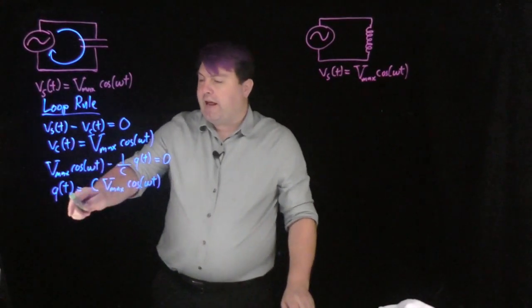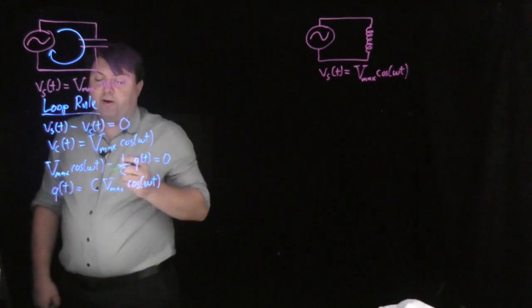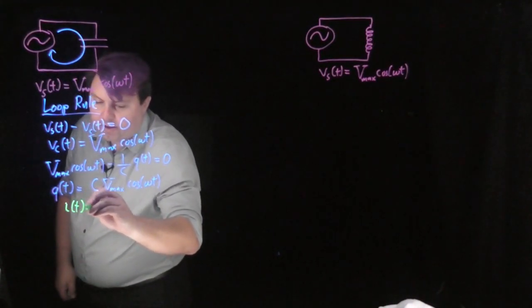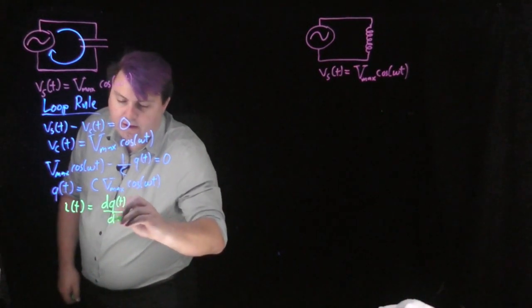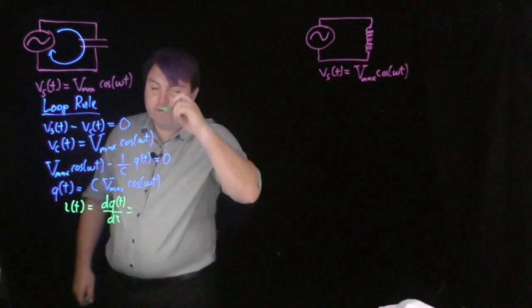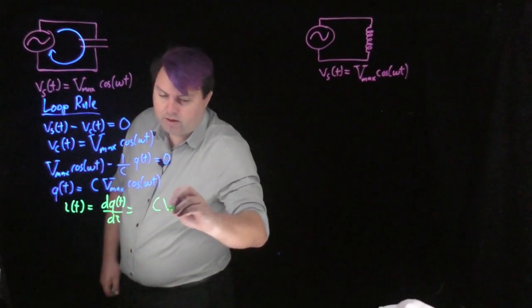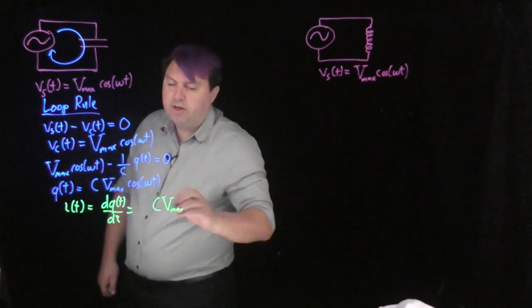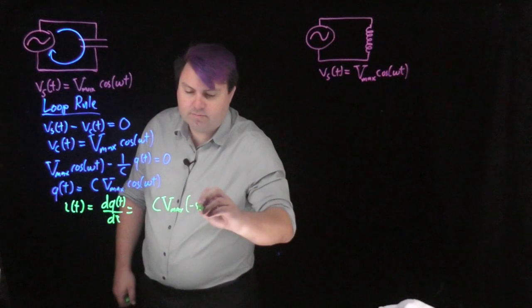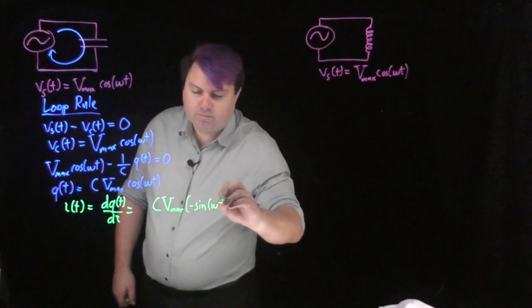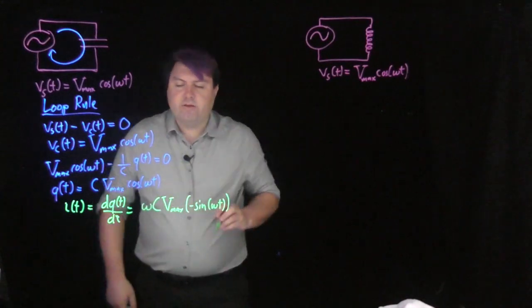This looks great, and now we know the charge as a function of time. If we want to find the current, we know that the current as a function of time is just the derivative of charge as a function of time. C and V are constants and remain unchanged. Taking the derivative, cosine gives us negative sine of ωt, and since we have the ω from the chain rule, we include that as well.